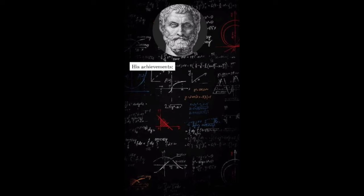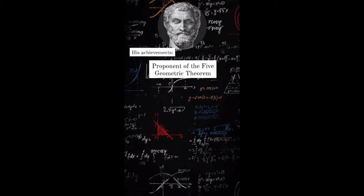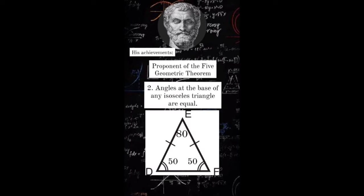Here are some of his achievements. He was the one who measured the exact height of the Great Pyramid of Giza. He was credited as the proponent of five geometric theorems. 1. A circle is bisected by its diameter. 2. Angles at the base of any isosceles triangle are equal.